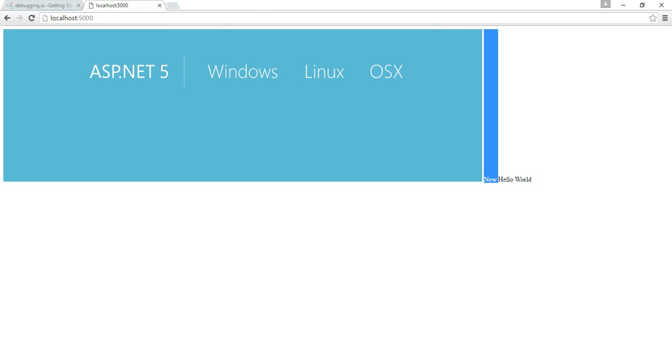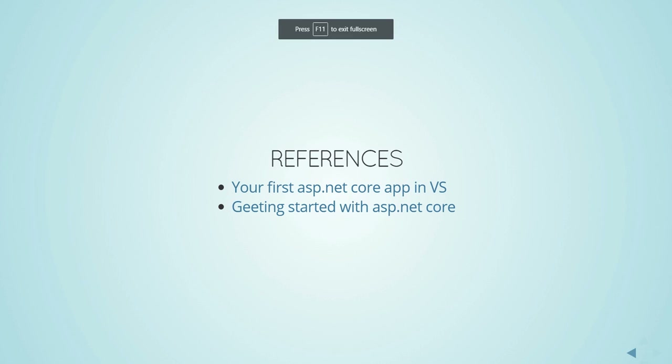The C# extension for VS Code will be automatically detected when you open your project. This extra step was needed because I'm on RC2 — once ASP.NET Core hits RTM, it will be automatic. Coming back to the slide deck: we've created our first application in Visual Studio Code, saw how to debug an ASP.NET Core project in VS Code, and started developing our application. Thank you for watching.